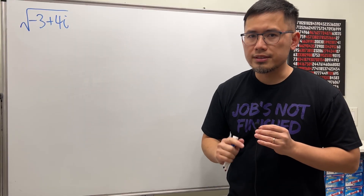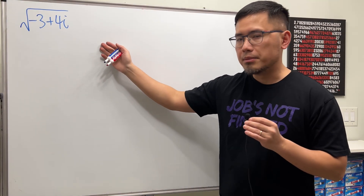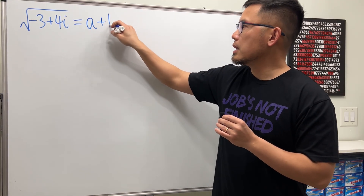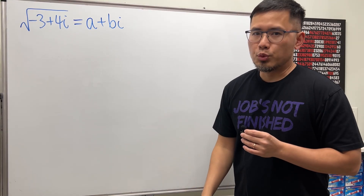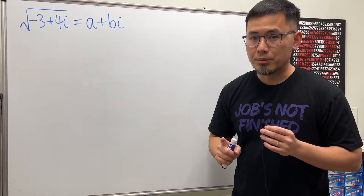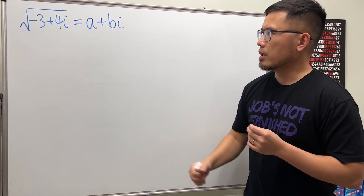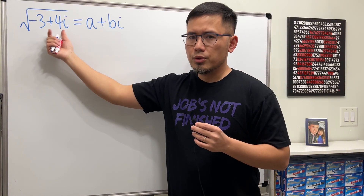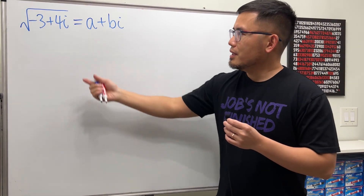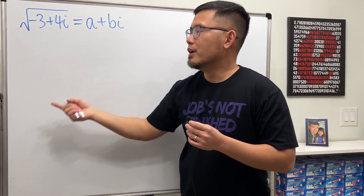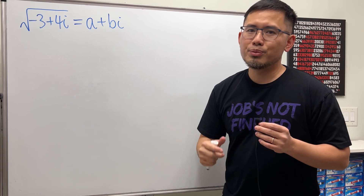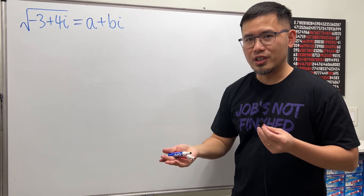I'll show you the algebra way to do it. We call the square root a plus bi, and we just have to figure out a and b, which must be real numbers. You might wonder why this will be complex — well, if it turns out to be real, then b will just be 0. A real number is a complex number, so this form is more general.